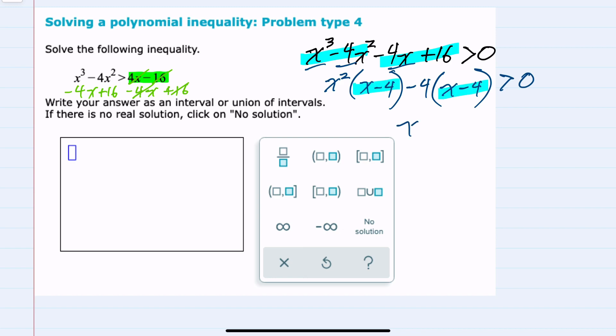I can factor those out. x minus 4. In this first expression, I'm left with x squared. In the second expression, a minus 4. So I factored by grouping.